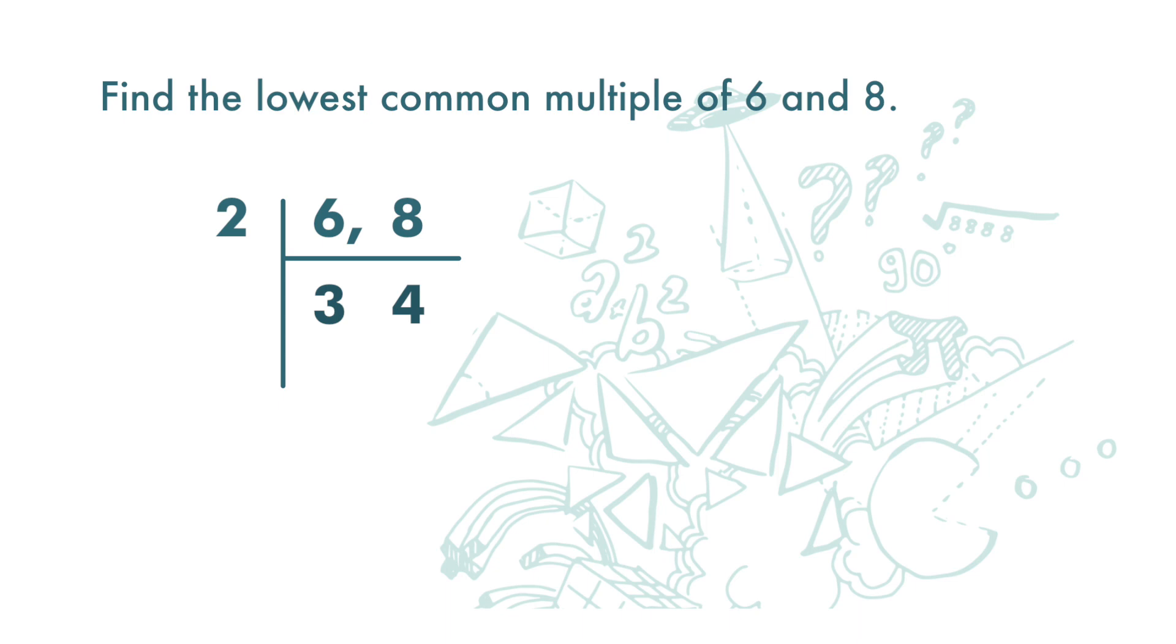We stop here. To get the lowest common multiple, we multiply 2 by 3 by 4, and the answer is 24.